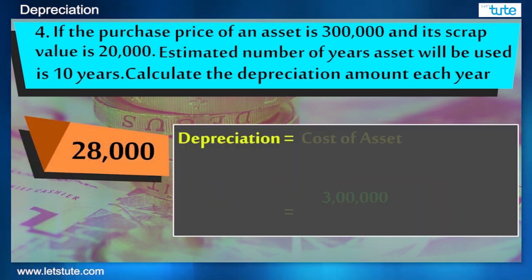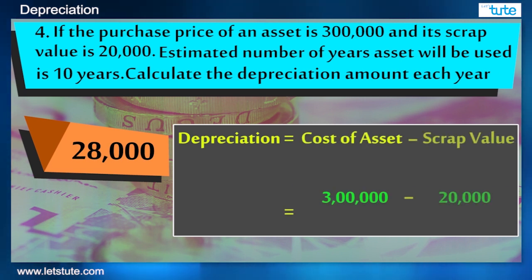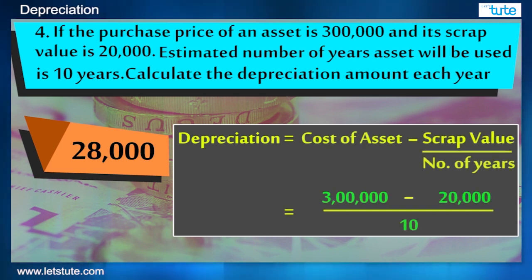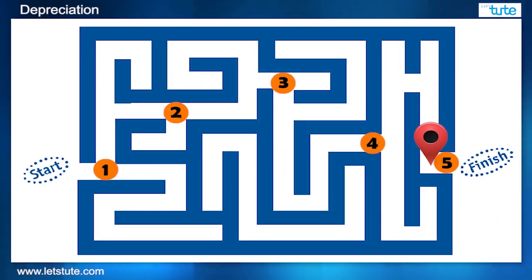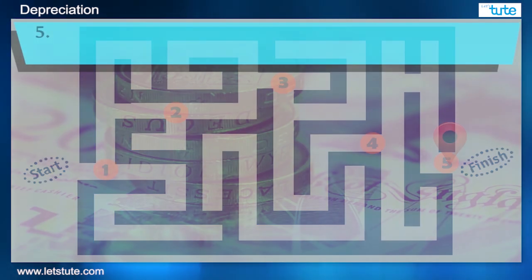Depreciation is equal to cost of asset minus scrap value, divided by the number of years. And here's the last one.